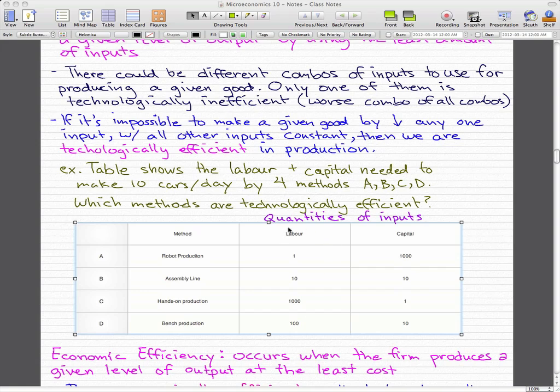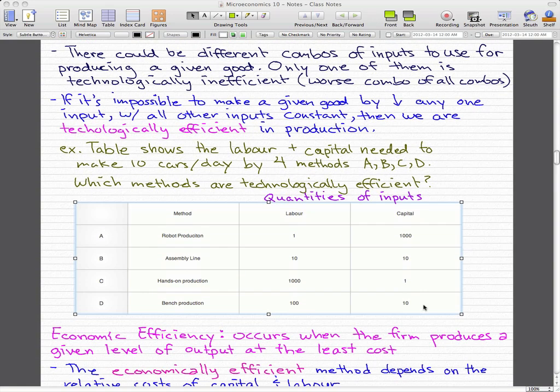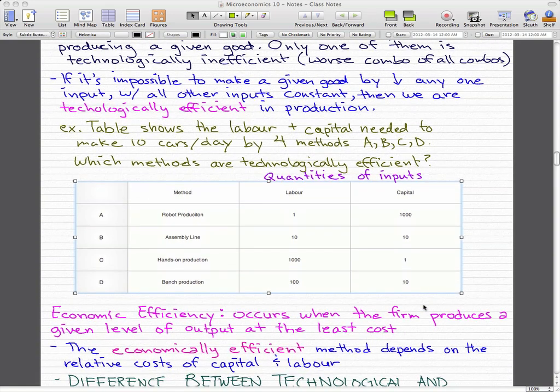And this is the amount of labor needed and the amount of capital that we need. You can see that if we use robots, then of course we don't need that much labor, we only need robots. But then that robot would probably cost a lot of money. But if we use hands-on production, then that would probably use a lot of labor, but the capital would probably be very small because anybody can make a car if they know how, or if they are given the right instructions.